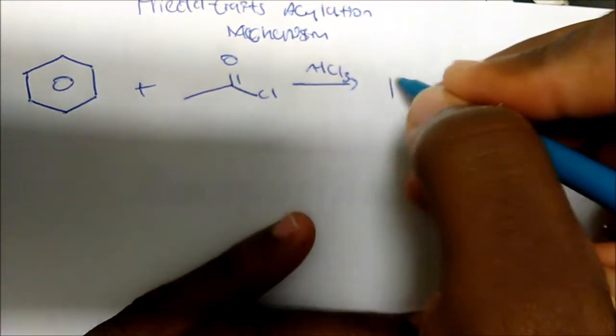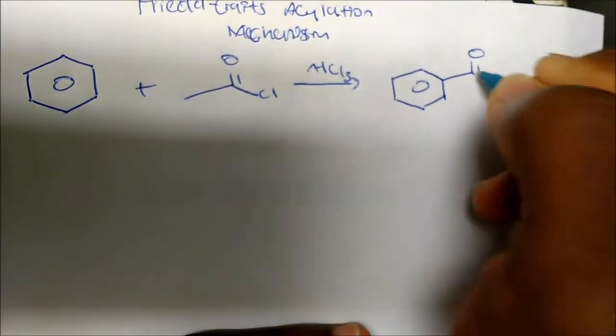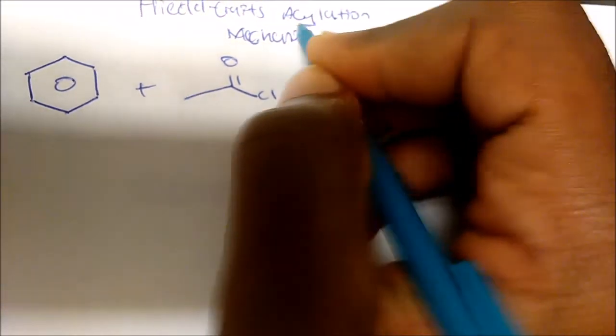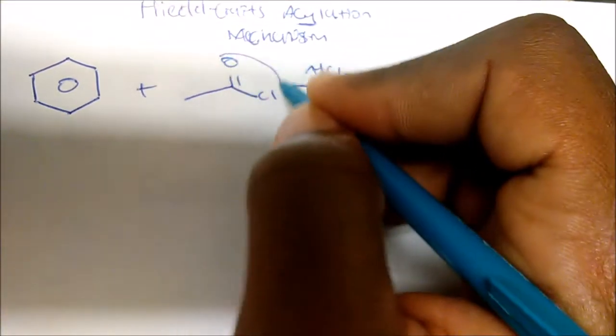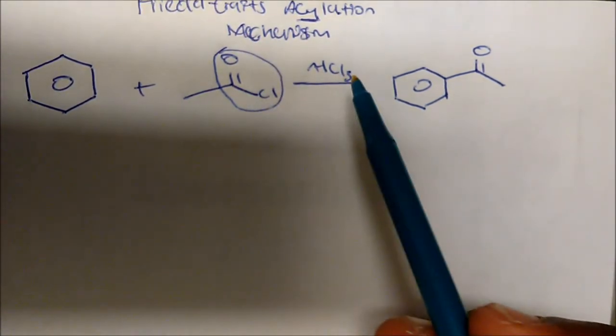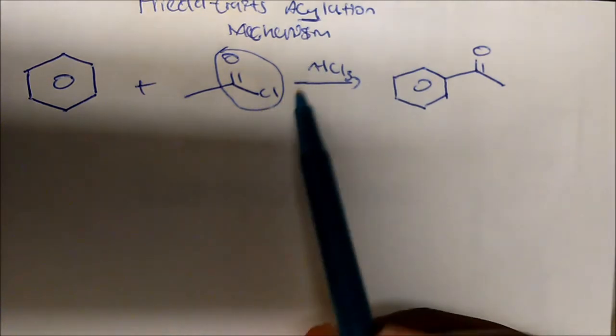I get acetophenone. Acylation implies an acid chloride where I have a carbonyl adjacent to a chlorine.